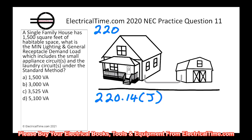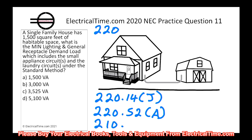The next section we're going to look at is 220.52A. Basically what that's saying is that we have to use a minimum of two small appliance circuits, not less than 1,500 volt-amps each. But 220.52A doesn't tell us about the minimum of two small appliance circuits — for that you're going to find it in another section: 210.52B1.